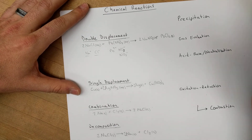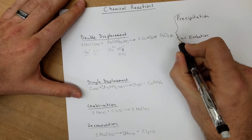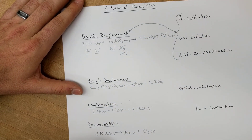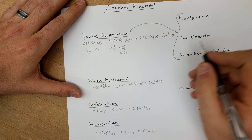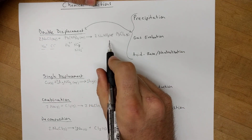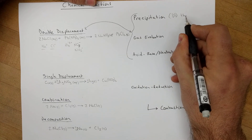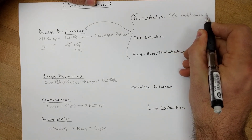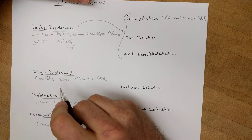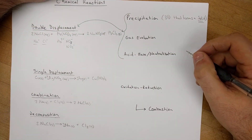Now we can move over to the other classification system and pick up the pace. All of these reactions we just discussed are types of double displacement reactions — reactions happening in water that perform a double displacement. What you've already seen is an example of a precipitation reaction. A precipitation reaction is a double displacement reaction that forms a solid, which precipitates out — forming in the aqueous mixture and sinking to the bottom of the beaker.